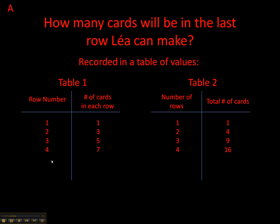Here's our first column — that one's easy. You start at 1 and add 1 each time, so it goes from 1 to 2 to 3 to 4. The second column is not as easy, but still not that difficult. We start at 1 and then add 2 each time, so it goes from 1 to 3, then add 2 to get 5, add 2 to get 7. I hope that was pretty straightforward.